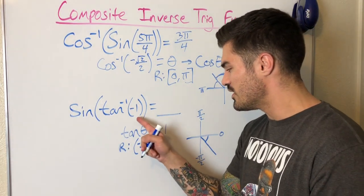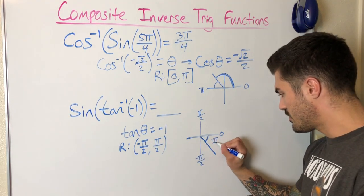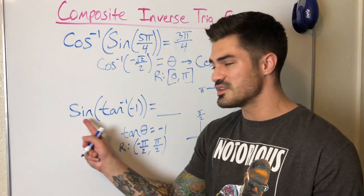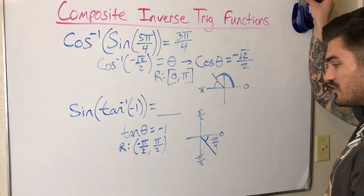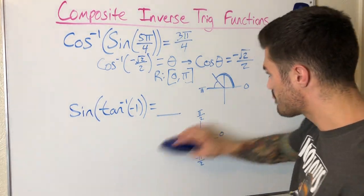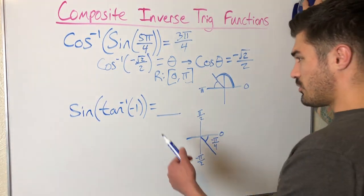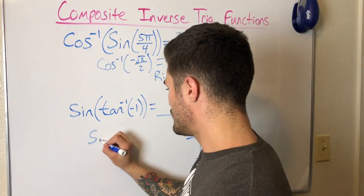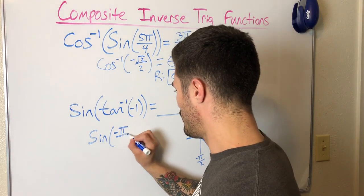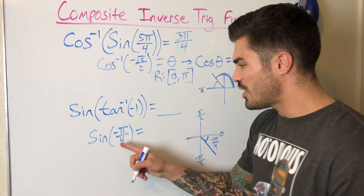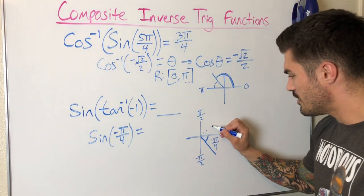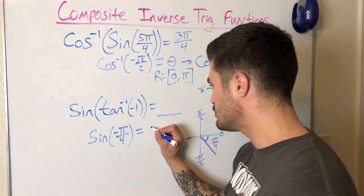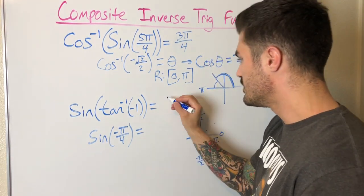So tangent inverse of negative one equals negative π/4. I replace tangent inverse of negative one with negative π/4 and take sine of negative π/4. A reference angle of π/4 for sine gives √2/2, and since we're in the fourth quadrant it's negative. So the final solution is negative √2/2.